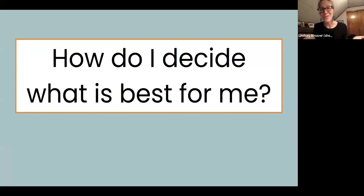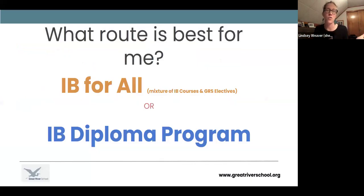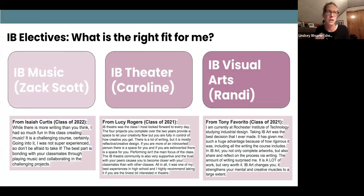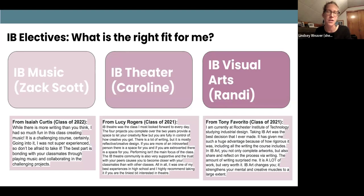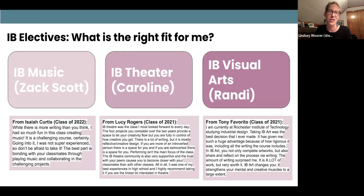So how do you decide as a student what route might be best for you? Remember, you're thinking about: am I going to take the orange path of the IB for All program, the mixture of IB courses and GRS electives? Or am I going to engage in the IB Diploma Program? As we preview this panel, we're also going to hear from alums and seniors about their IB music, IB theater, or IB visual arts experience, and share what surprised them or stood out as you think about your elective options.